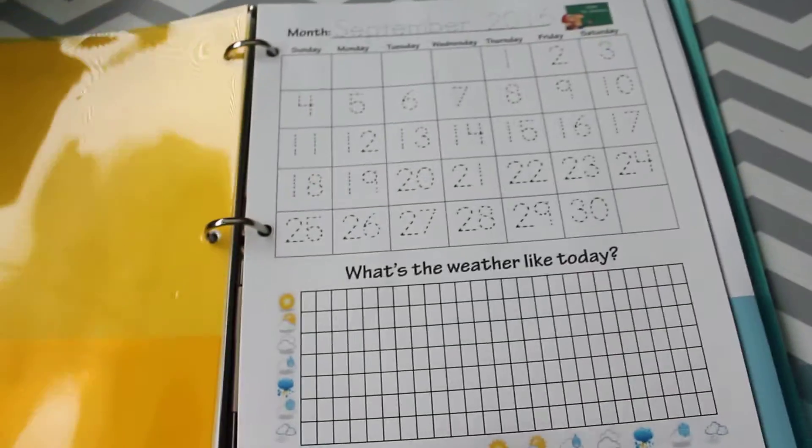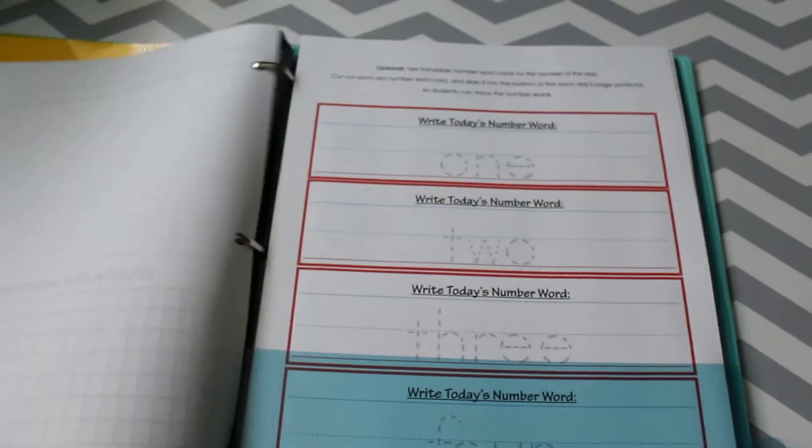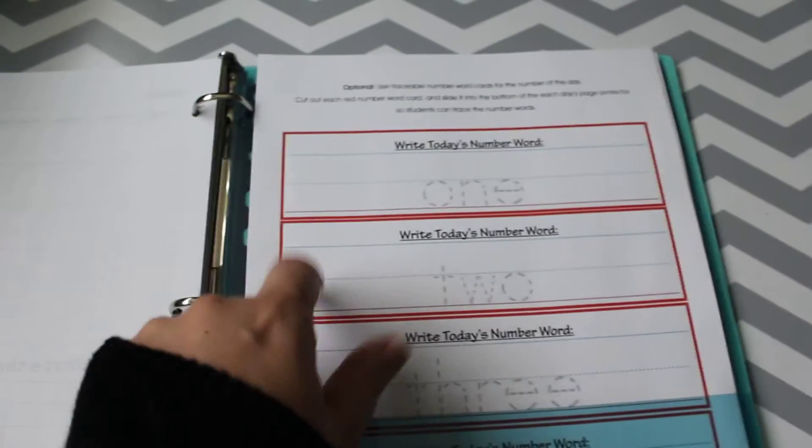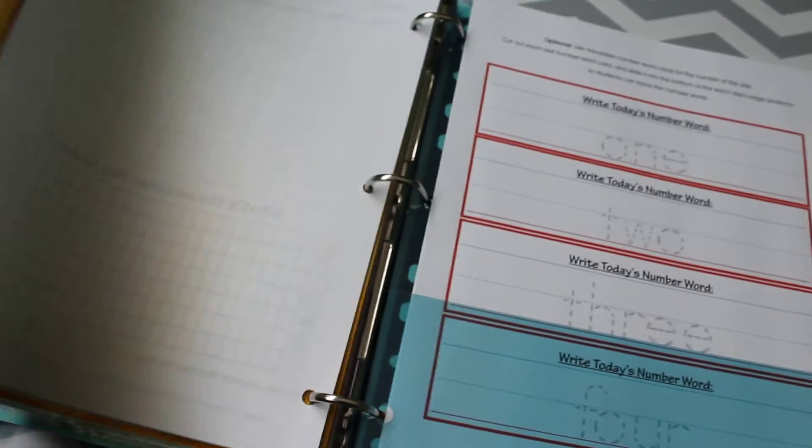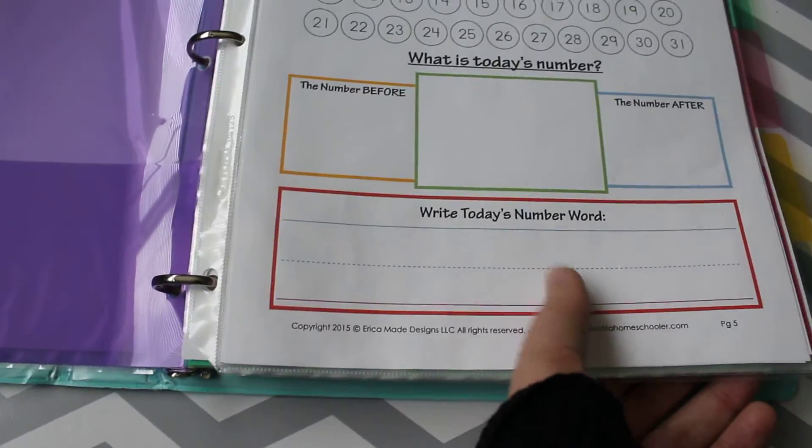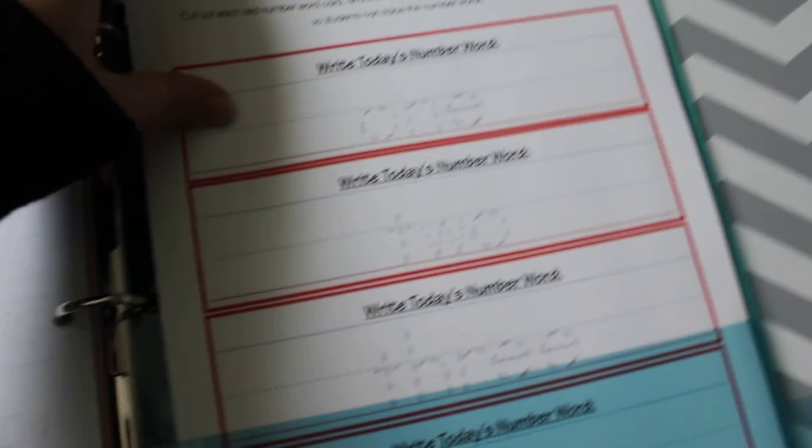Then this tab is just extra. These are all the extra calendars that I'll switch out throughout the year. These are the things I was showing you in the beginning tab for the daily - I'll slip it down in here in the page protector and then they'll copy the letters of today's number word, and then just extra calendar.